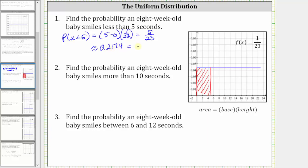For number two, find the probability that an eight-week-old baby smiles more than 10 seconds, which means we need to find the area under the curve from x equals 10 to the highest x value of 23, which is this area here.